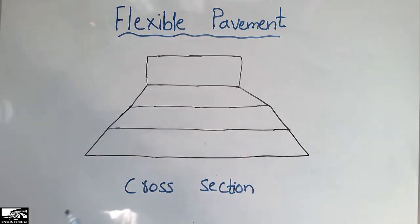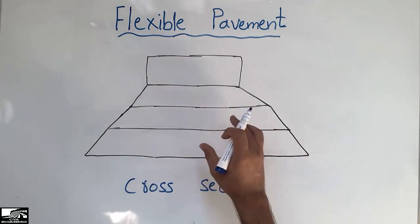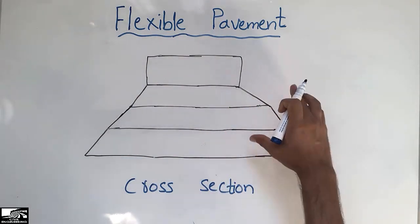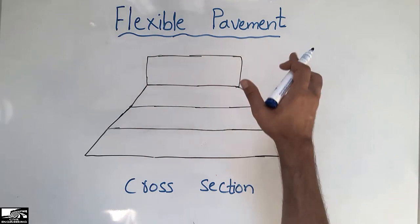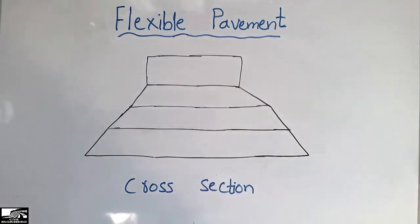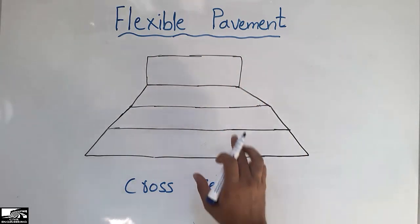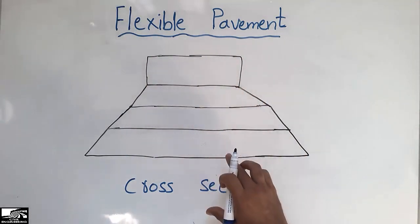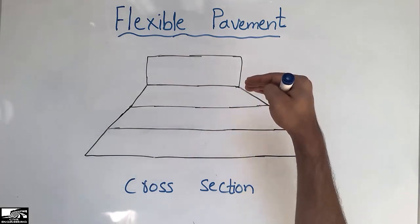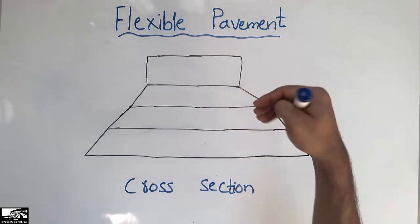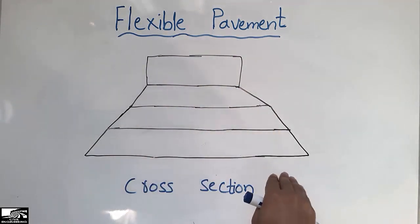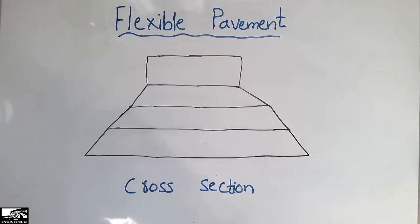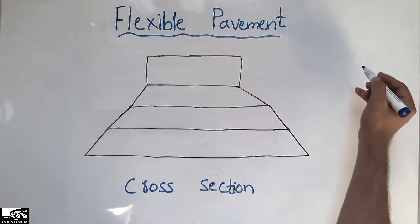I want you to know about the different layers on which a flexible pavement is based. This shows the cross-section of the pavement, in which we provide different layers to support the load and to distribute the load to the bottom of the pavement.